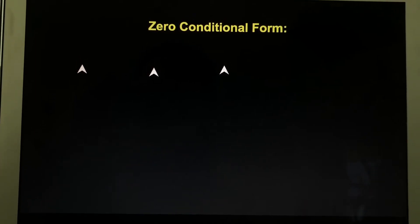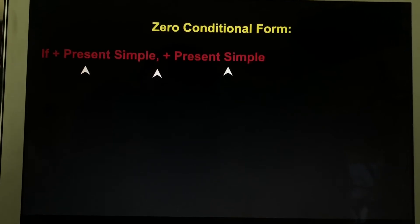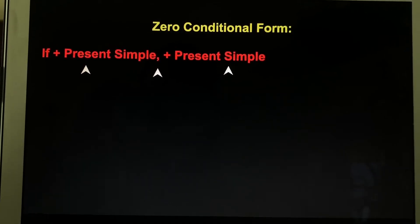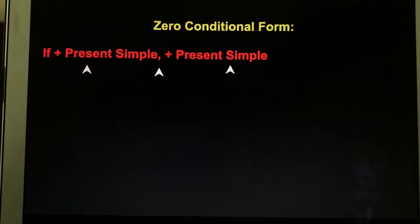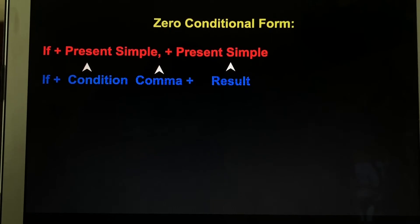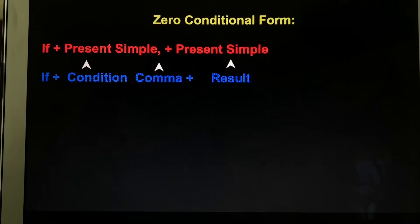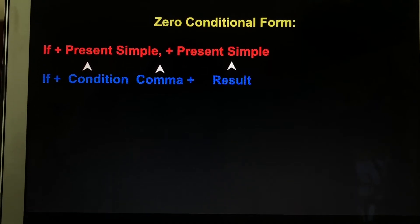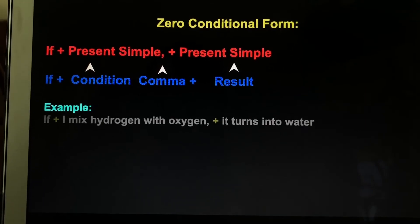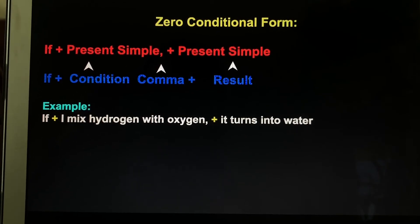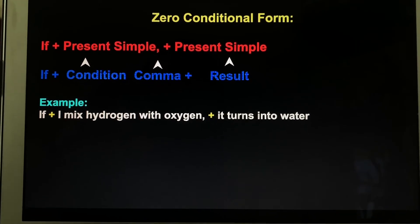Zero conditional form. So how to form the zero conditional: if plus the present simple, comma, plus the present simple. So if plus the condition, comma, plus the result. For example: if I mix hydrogen with oxygen, it turns into water.